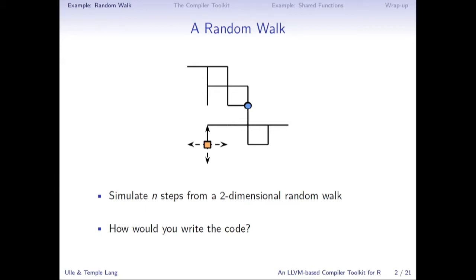This diagram shows what the path might look like. Something to notice is that it can visit points it's already been to — it might go out to a point and then come back. Eventually it ends up somewhere like the orange square there and has to make a decision for the next step. The question is: how would you write the code for this if you wanted to simulate it in R?